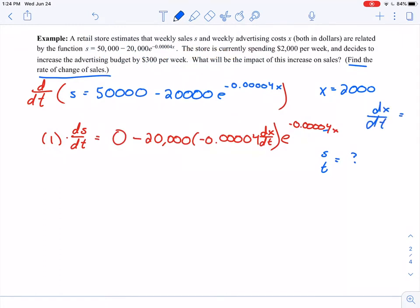DX over DT, we said, was 300, just to give myself a little bit more room. So at this point, let's see. We said DSDT before I erased it. We said this is what we're looking for. This is what I'm looking for. DXDT, I know what that is. That's 300. Remember, E, this is just a constant, just in case we've forgotten. Remember, E is just a constant. I know what that number is. 2.718, I believe. X, well, that's also a number that we have. We know that X is currently 2,000.